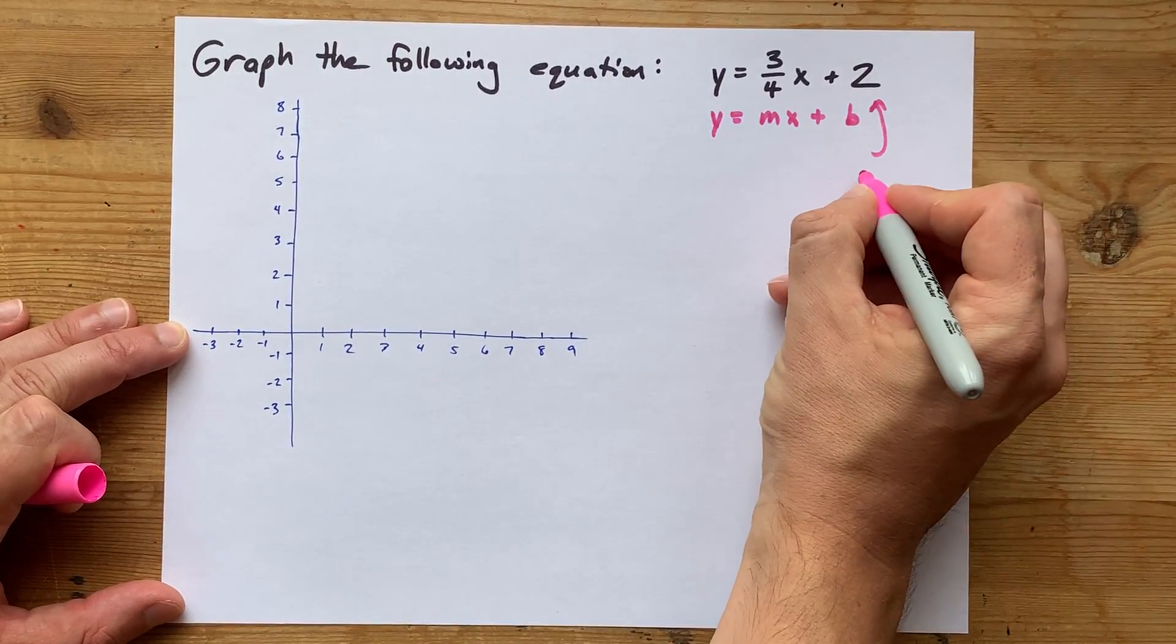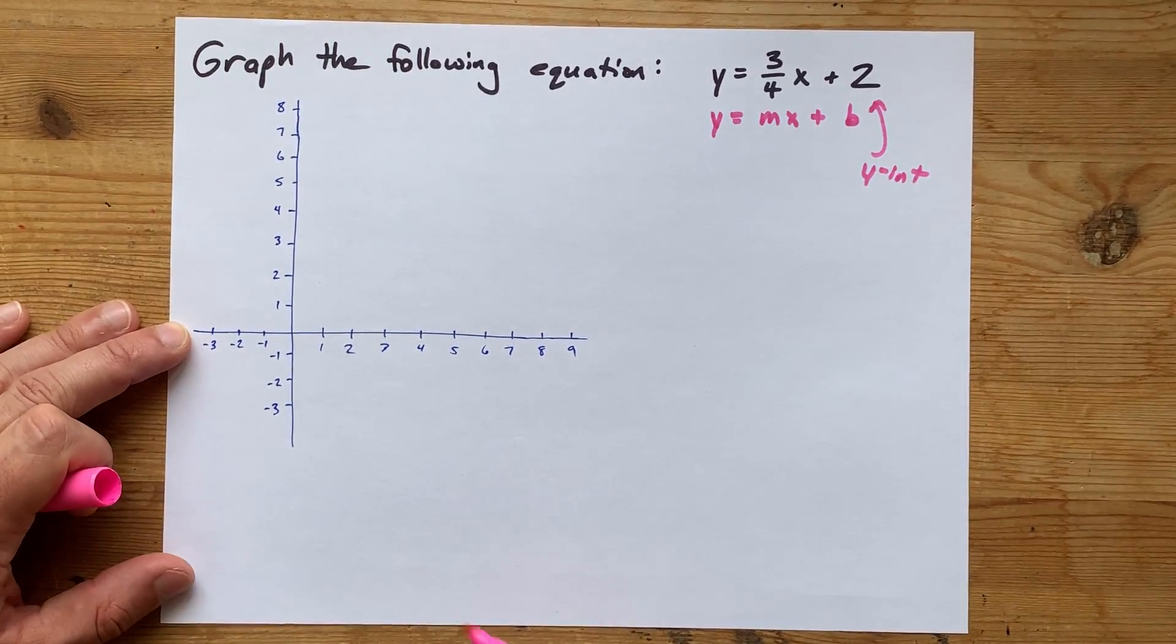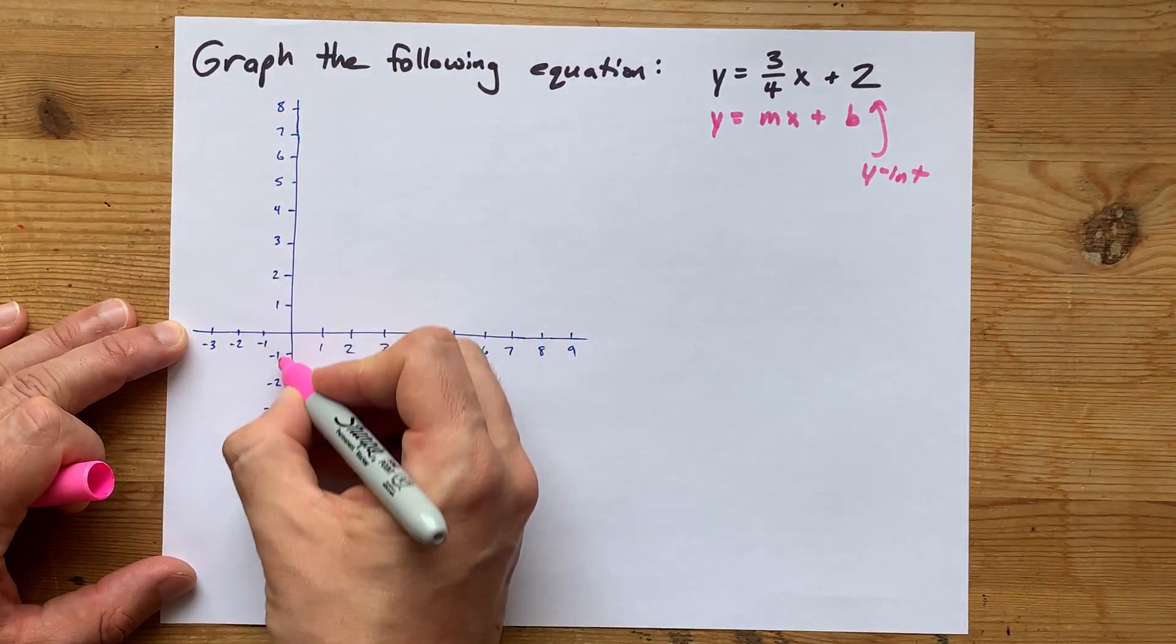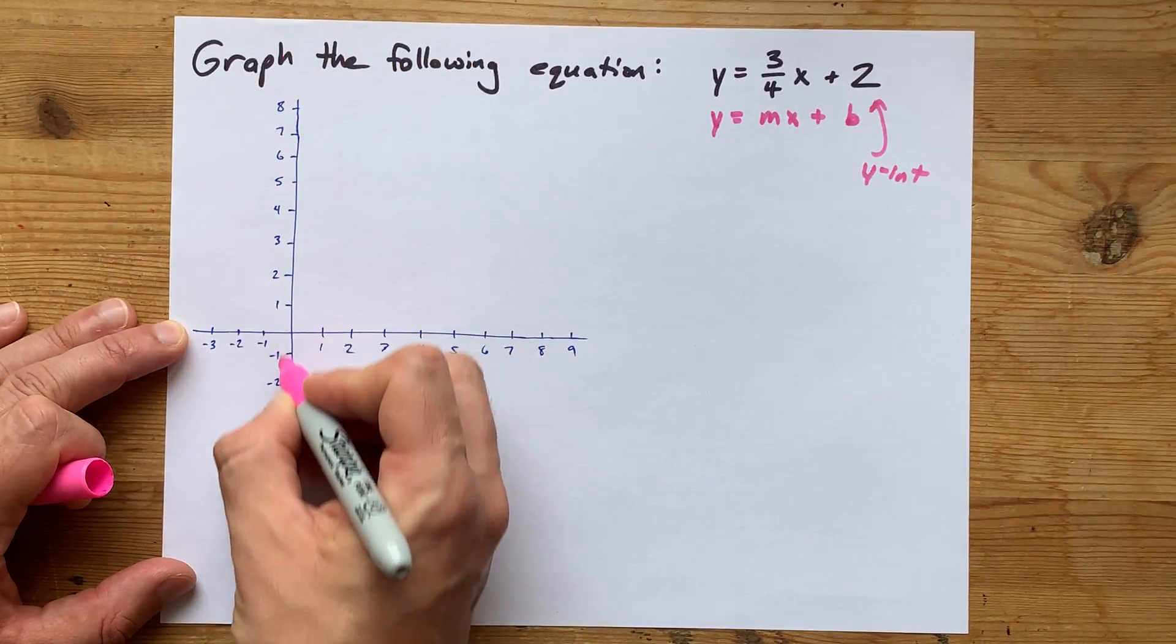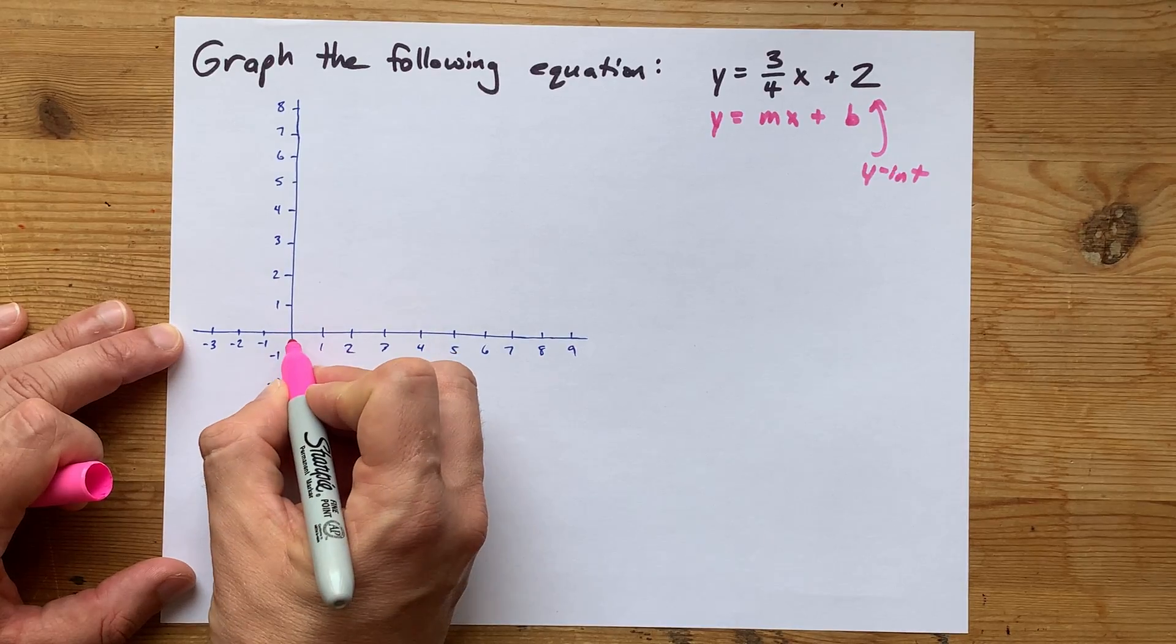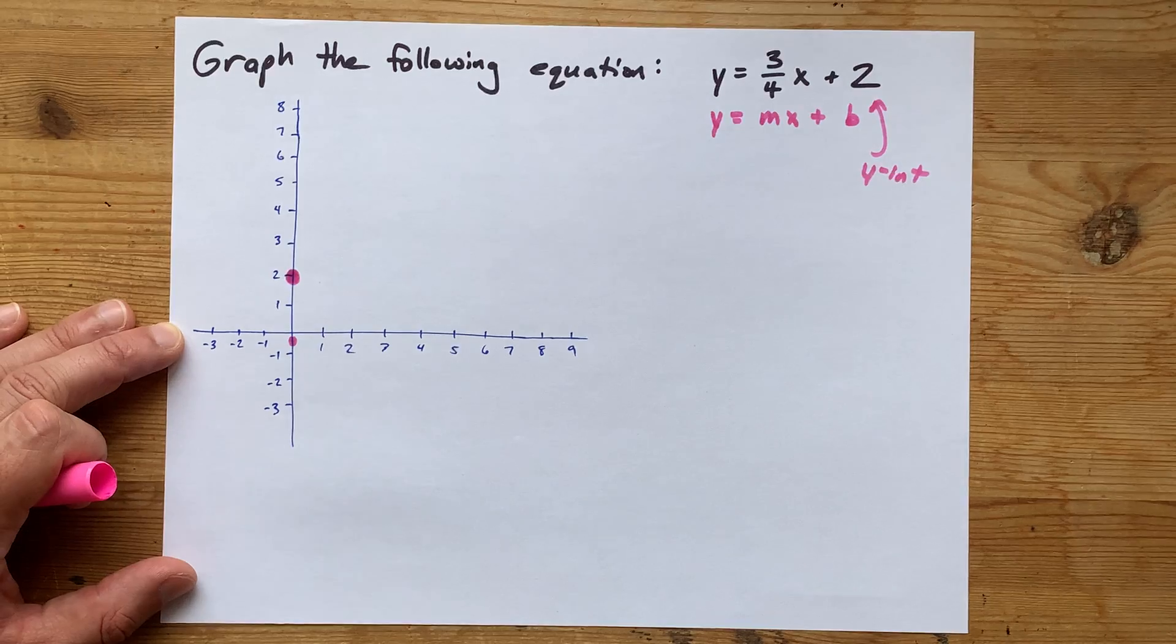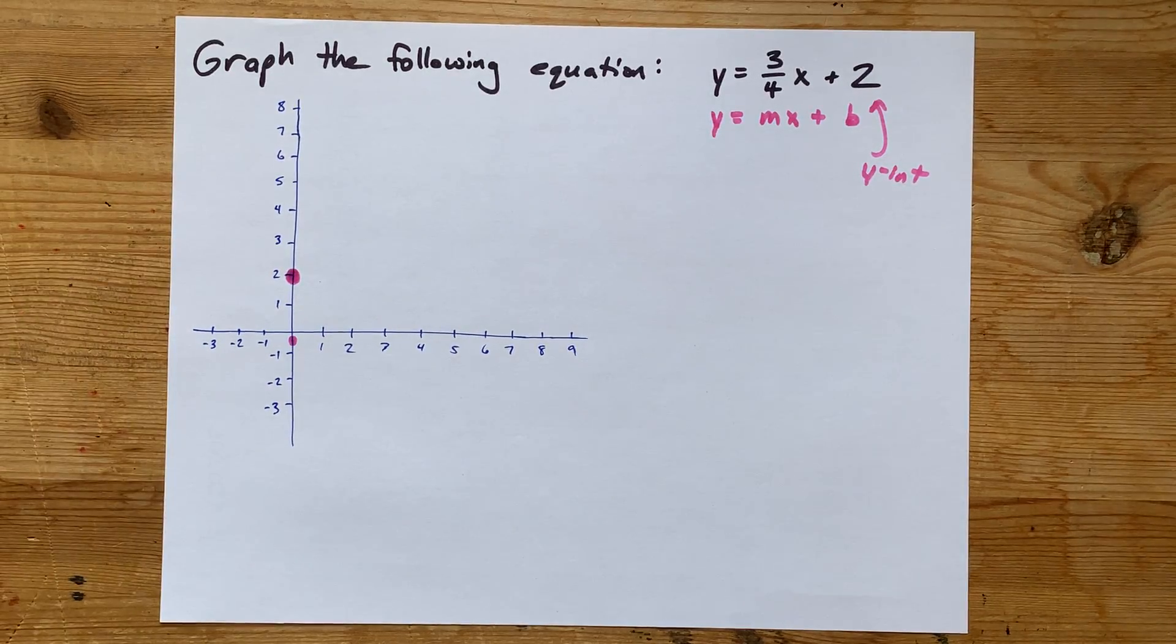What that means is that this number here, positive 2, is the y-intercept. That's where the line hits this y-axis. That's the up-down axis that crosses through 0 on the x. See 0 here? Anyways, positive 2 is where I'm going to put my dot. So that's my y-intercept. Great.